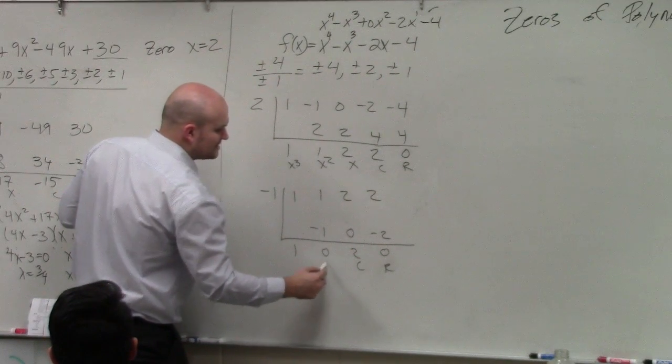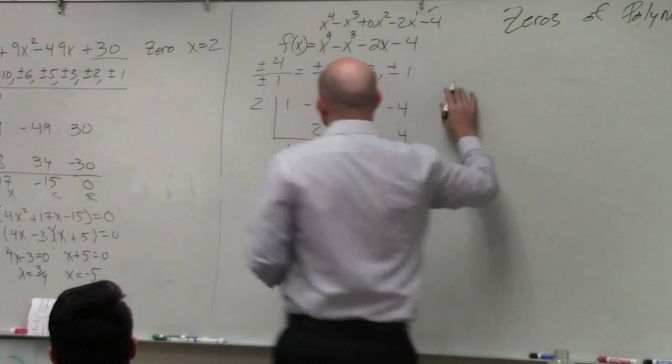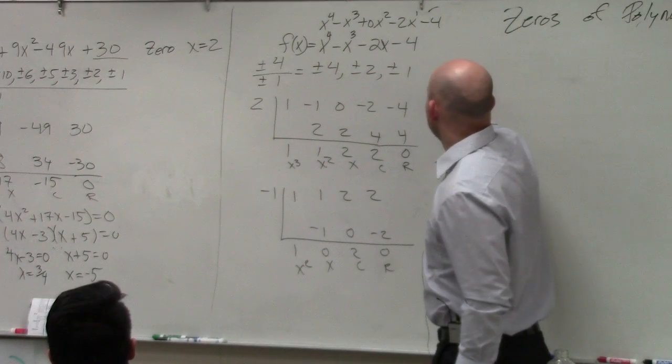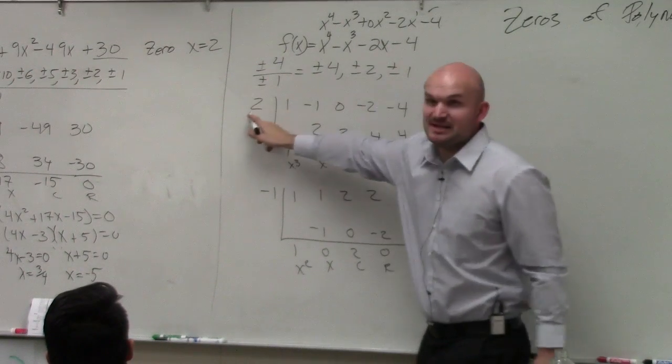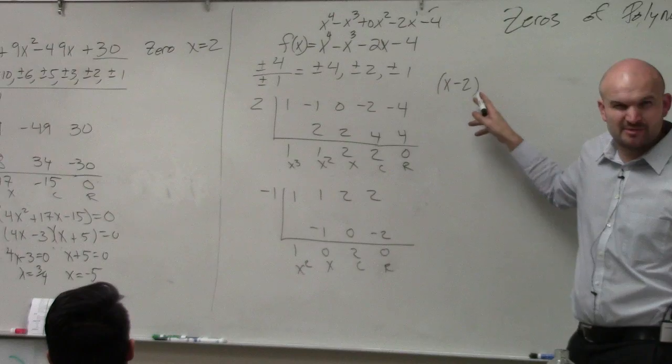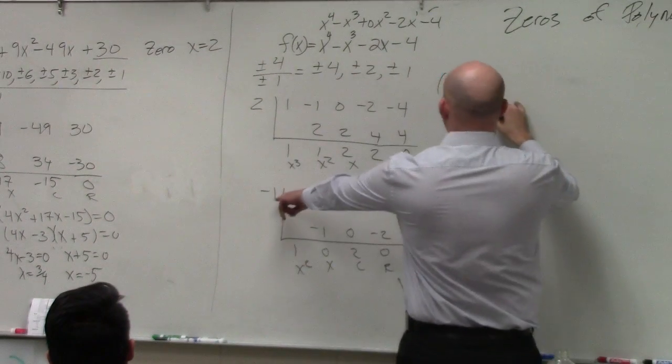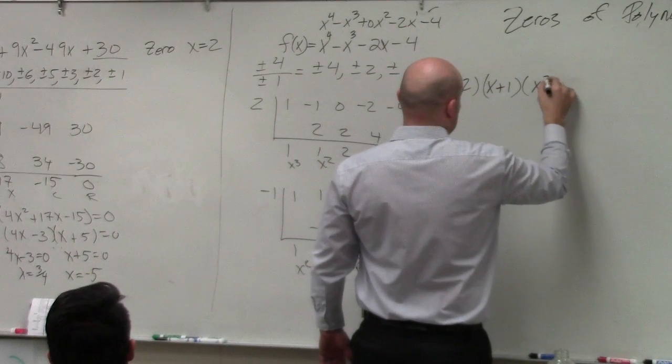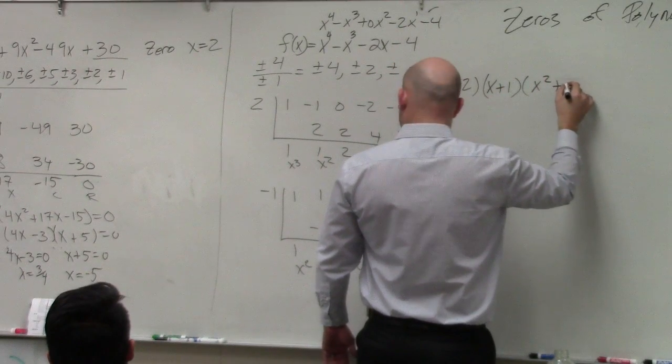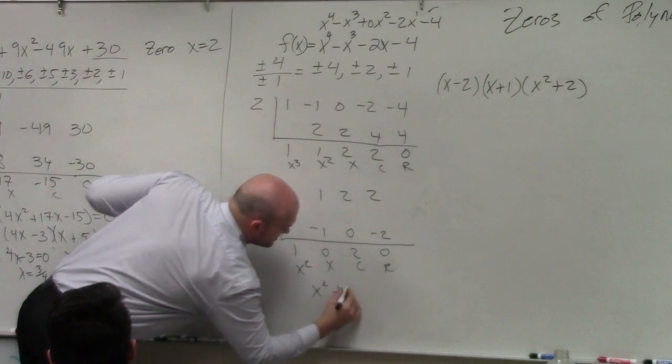So a remainder, constant, linear, quadratic. So now I know that x minus 2, if that's my zero, then that's my factor, right? Is everybody kind of okay with me just writing it like that kind of quickly? And then that means x plus 1 is a factor, and then I have x squared plus 2 as my other factor, x squared plus 2.